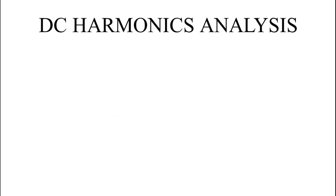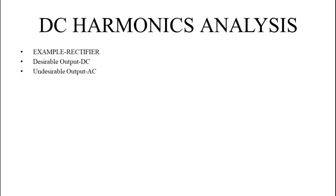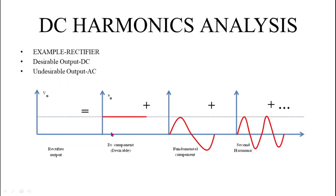Let's take an example of a rectifier. A rectifier is a device which converts AC into DC, so in the case of a rectifier, our desirable output is DC and AC is our undesirable output. The output of a rectifier can be represented as a sum of a DC component, a fundamental component, the second harmonic component, and so on.